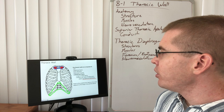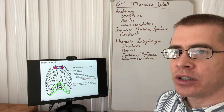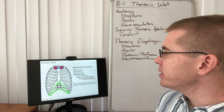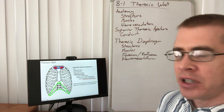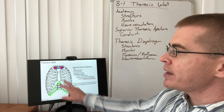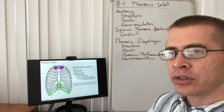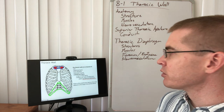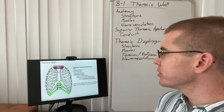When we look at the wall of the thorax, it's composed of a number of different things, including fascias. The internal fascia is called the endothoracic fascia — that's a layer of the deep fascia, and it's the layer that extends over the apex of the lungs to form the superpleural membrane. So the superpleural membrane is a portion of the endothoracic fascia.